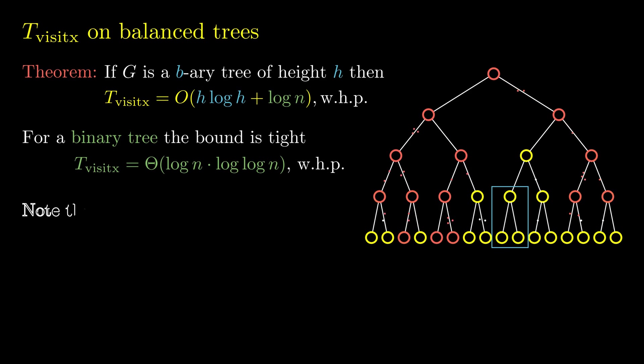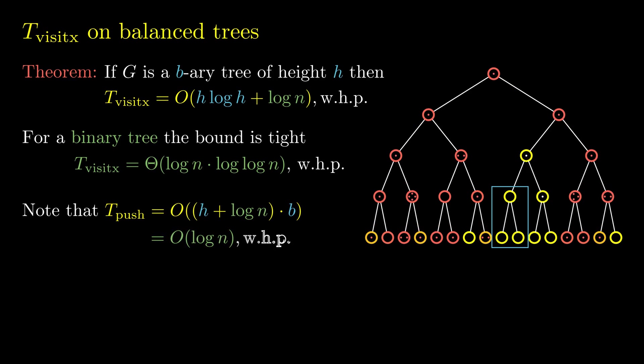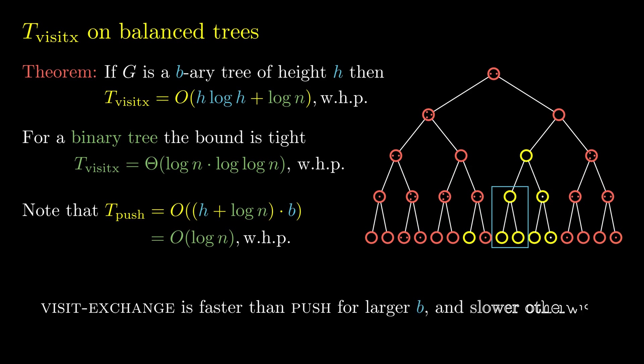Note that the push process's broadcast time is logarithmic for a binary tree. By small modifications, we can make the binary tree into a regular graph, creating another example of a graph where there is a discrepancy between push and visit exchange, though the log log n gap is much smaller than in the previous counterexample. However, as we increase b toward the star graph at the extreme point, visit exchange becomes faster than push when b is of the order of log n, reinforcing the earlier intuition that in graphs with hubs, visit exchange is faster.